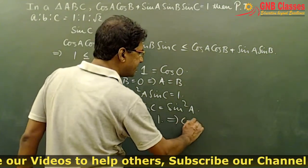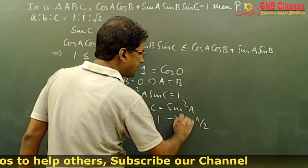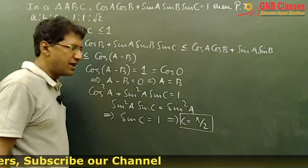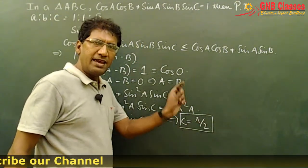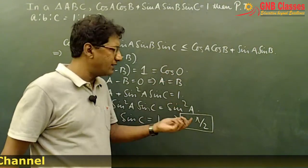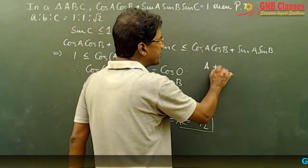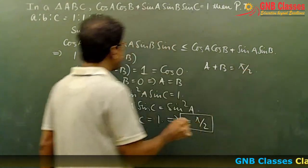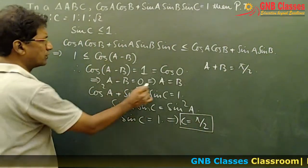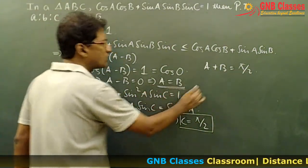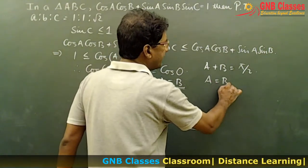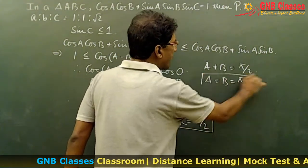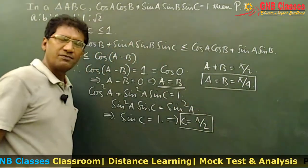sinC = 1 implies C = π/2, that is 90°. Since A + B + C = 180°, we get A + B = 90°. And since A = B, we have A = B = π/4, that is 45°.